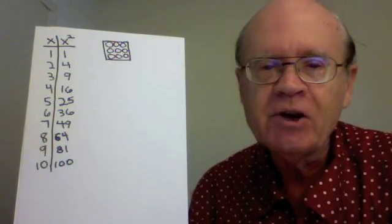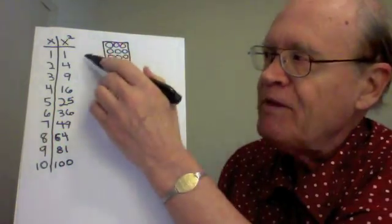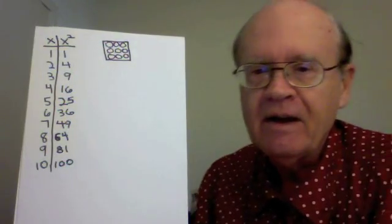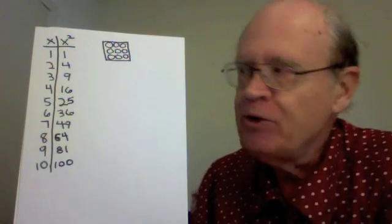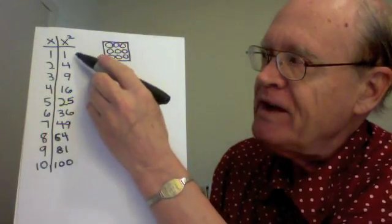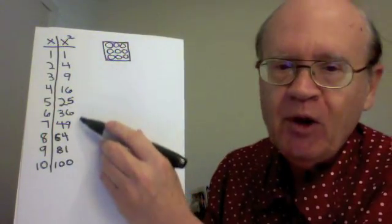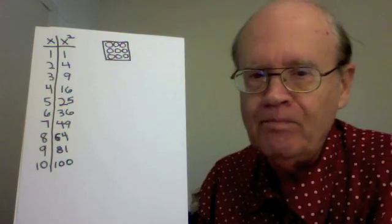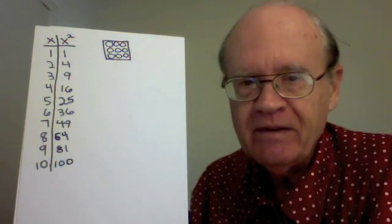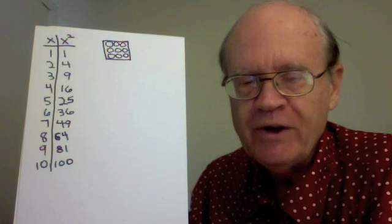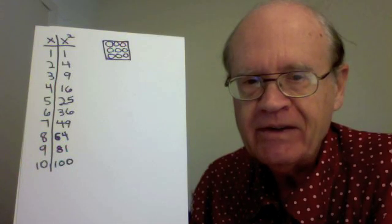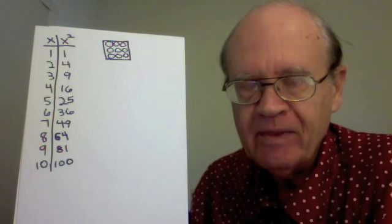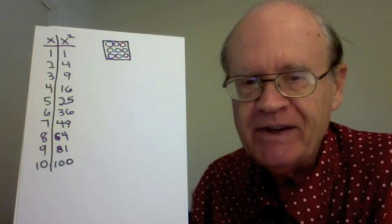Now let us look down the column of square numbers and try to find a pattern. What can you do to one number in the X squared column to get the number below it? More specifically, what do you need to add to one number in the X squared column to get the next number? We could call these the differences.